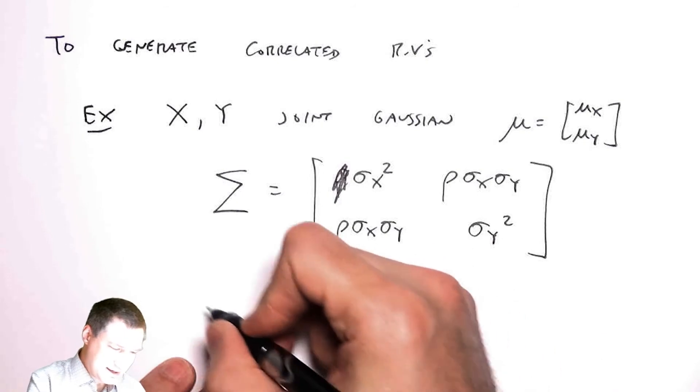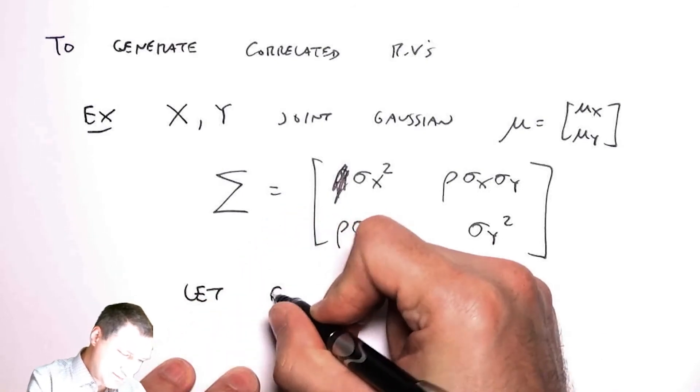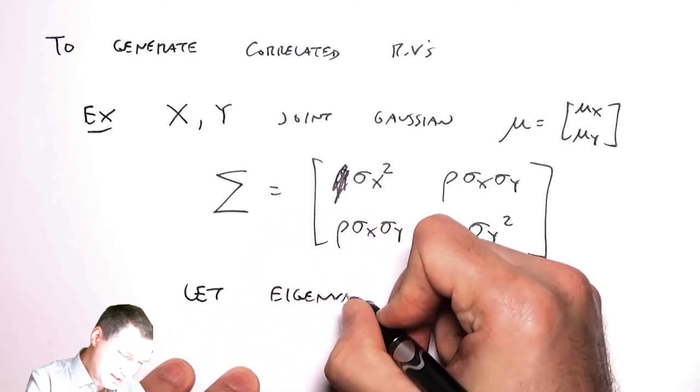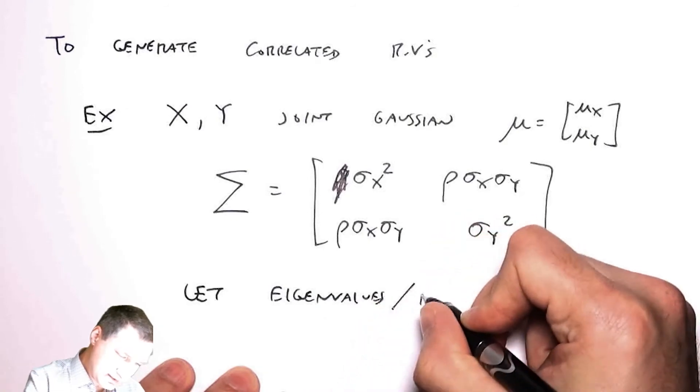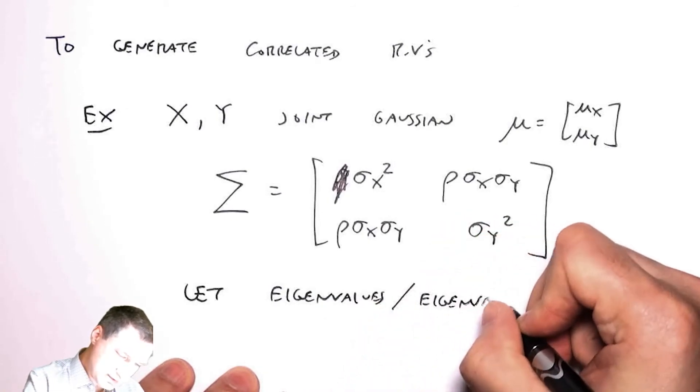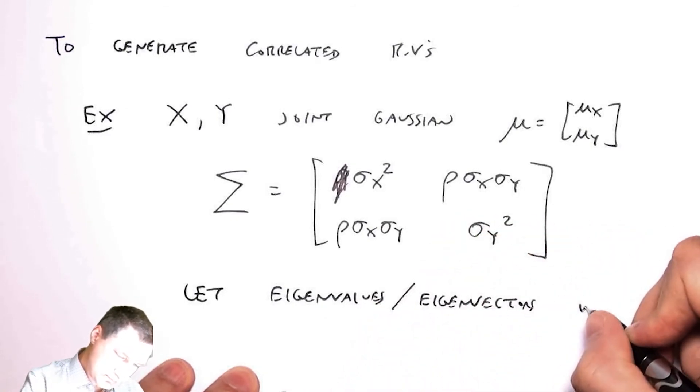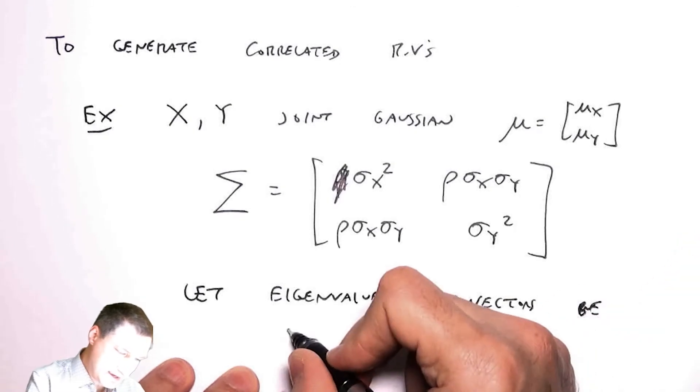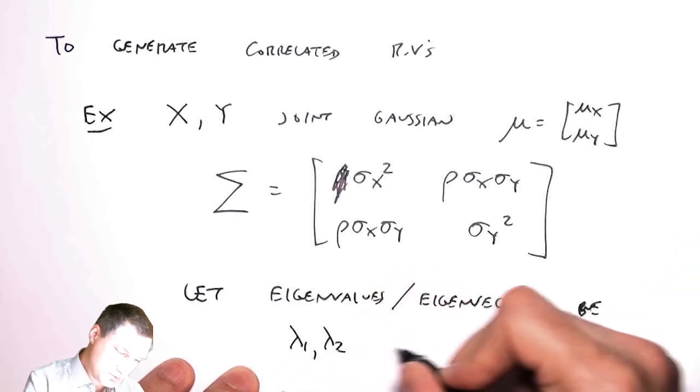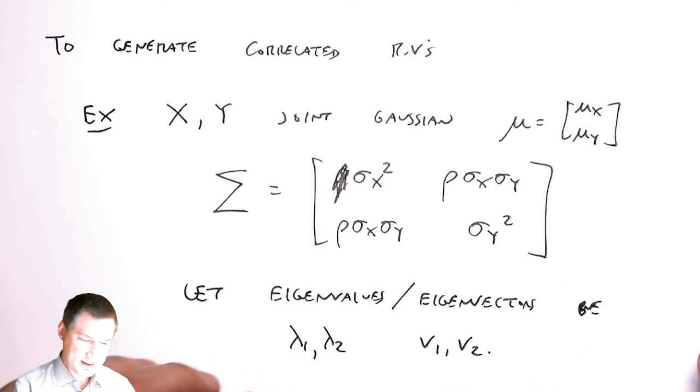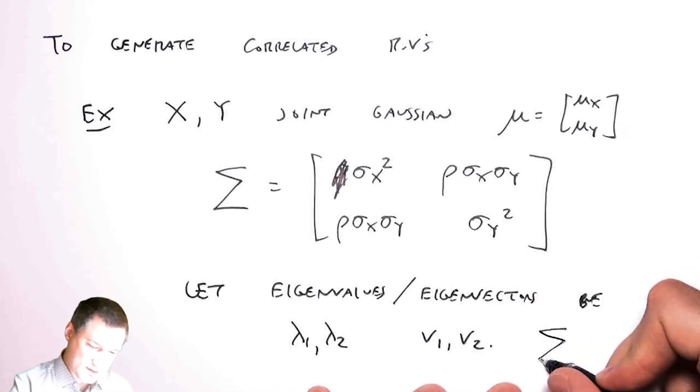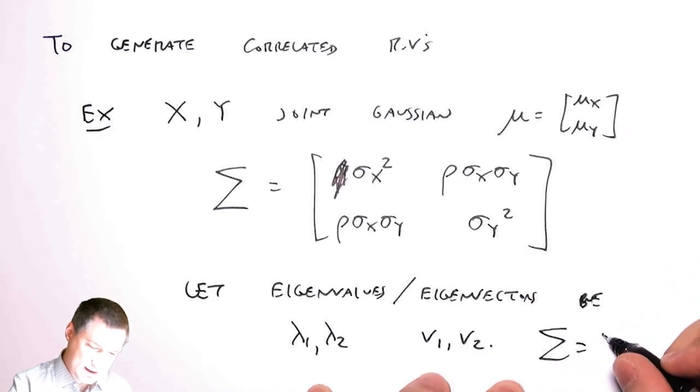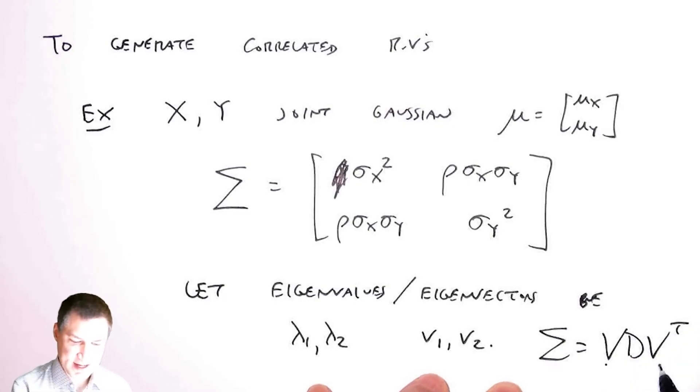If I let the eigenvectors and eigenvalues of the sigma matrix be given by lambda 1, lambda 2, and the corresponding v1, v2, then I can write sigma like an eigendecomposition, VDV transpose, where this has the eigenvectors and this has the eigenvalues along the diagonal.